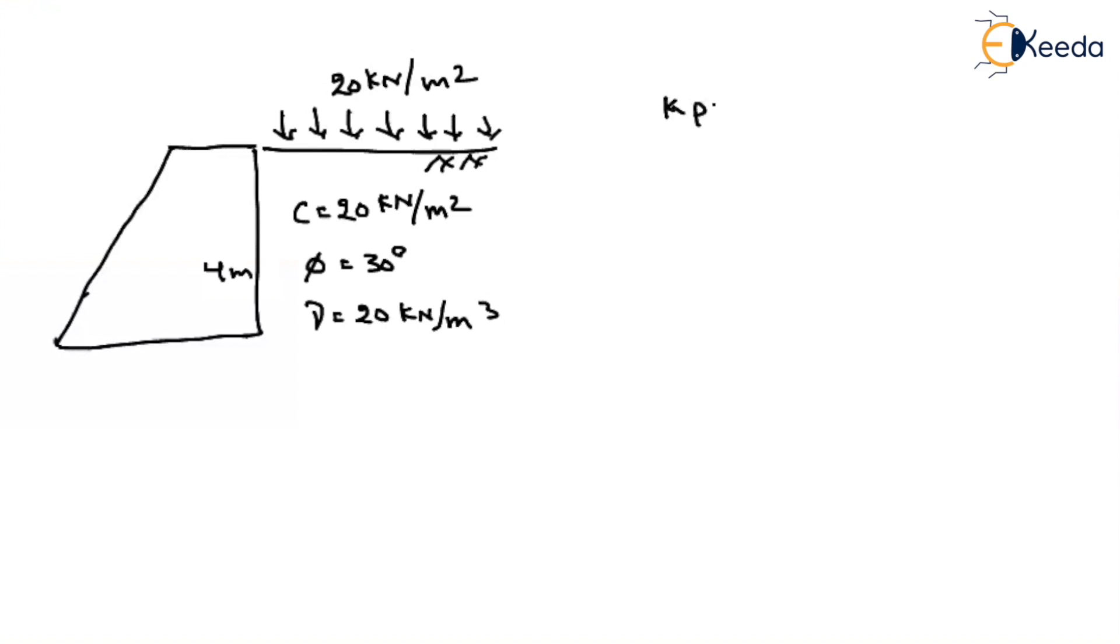First find out what is the passive earth pressure coefficient that will be 1 plus sine phi divided by 1 minus sine phi. If we substitute phi equal to 30, then Kp will be equal to 3.